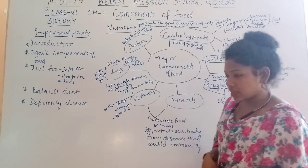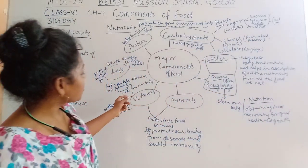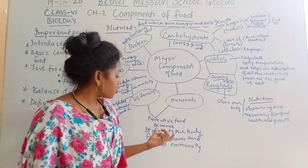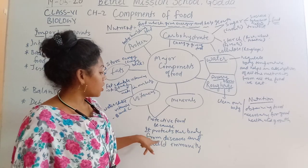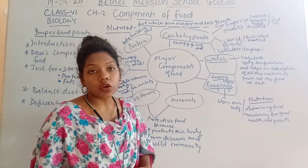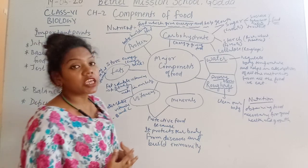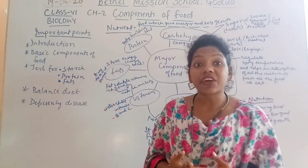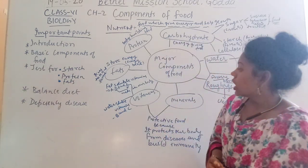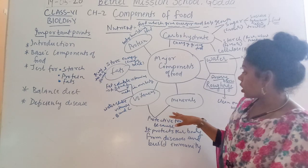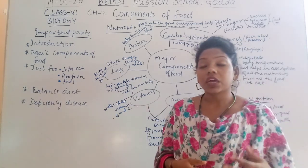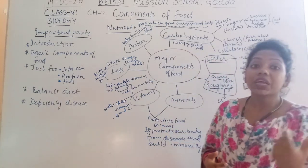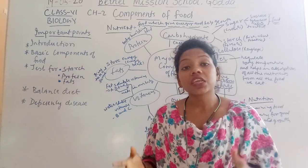Another component is vitamins and minerals, also called protective food. Both vitamins and minerals are called protective food because they protect the body from disease and build immunity. Mainly, vitamins and minerals are obtained from fruits and green vegetables. That is why it is called protective food — because it builds our immunity and protects us from various diseases.